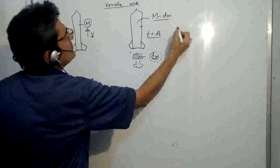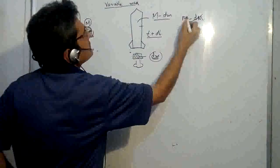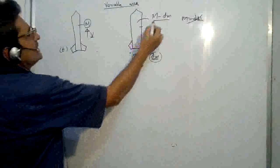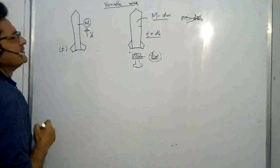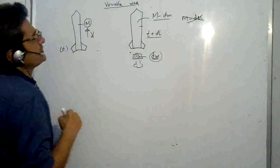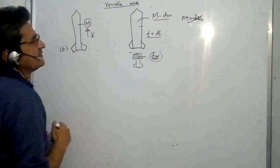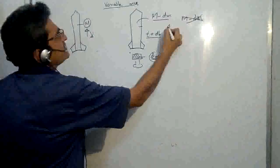Don't write it as m minus capital dm, it would be wrong. It is m minus small dm. Please keep in mind, otherwise you will get a negative sign in the final solution which will not be the correct result. So it is m minus small dm because small dm has come out, and the velocity at this point of time be v plus dv.